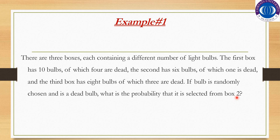अगर थोड़ा सा previous lecture recall करें — हमने यह example की थी और उसमें question यहाँ तक था: 'What is the probability that a randomly chosen bulb is a dead bulb?' उस चीज़ की probability calculate करनी थी। अब हमने क्या करना है — if a bulb is randomly chosen and is a dead bulb, अब वो कह रहा है that bulb is a dead bulb — this is known, that has been happened. What is the probability that it is selected from box 2 — यह हमें बताना है। तो यहाँ पर conditional probability आपस आजाएगी।